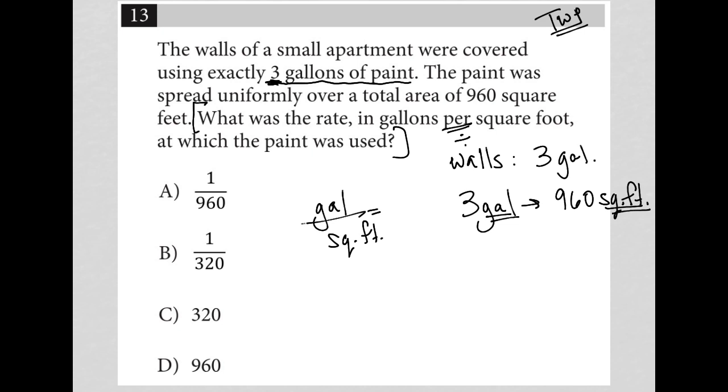I know from the question that I have three gallons and I have 960 square feet. So I have three divided by 960. Now, I do not see three over 960 as an answer choice, and I recognize that I can simplify this by reducing that fraction.